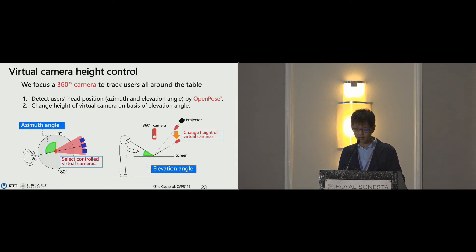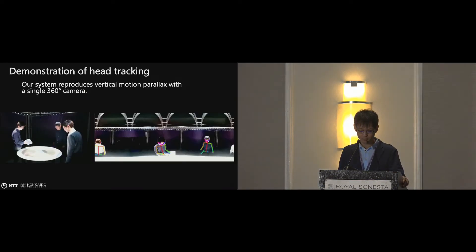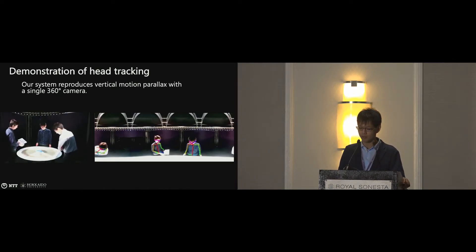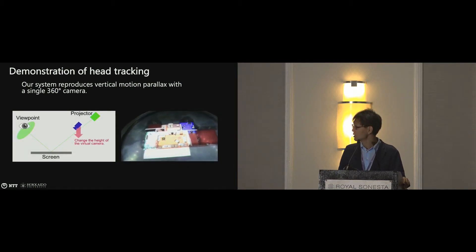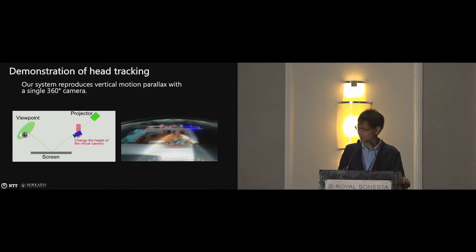We use a single 360-degree camera and OpenPose to detect the user's head position around the table. The process is simple: first, OpenPose detects the user's head position; second, the viewpoint image height changes according to the user's head position elevation angle. This is a demonstration of head tracking. Our system reproduces vertical motion parallax with a single 360-degree camera and OpenPose, and you can see the changing height of the virtual cameras in the demo.